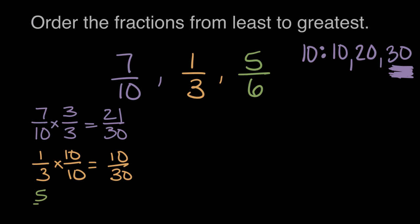And finally, five-sixths, what do we need to multiply here to get thirty? Six times five is thirty, so we multiply the numerator times five, and five times five is twenty-five.